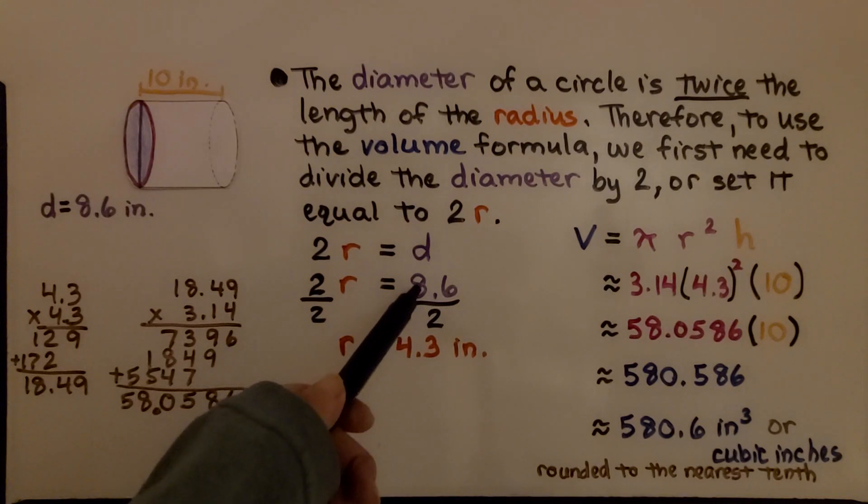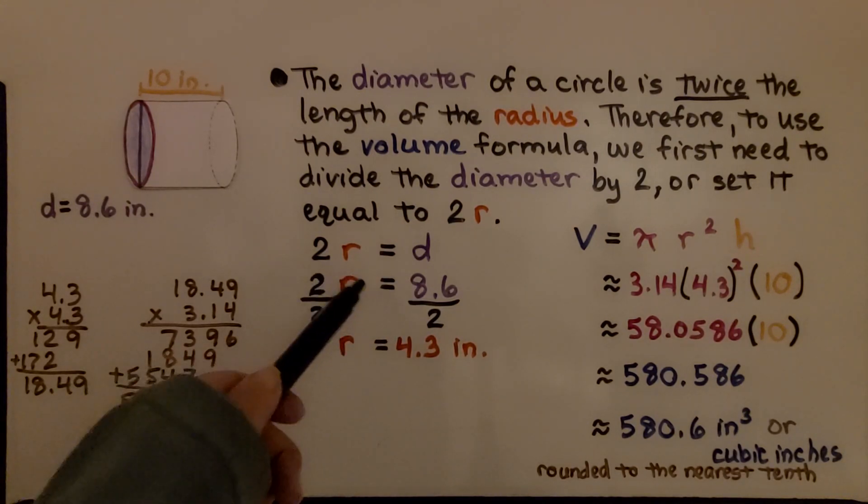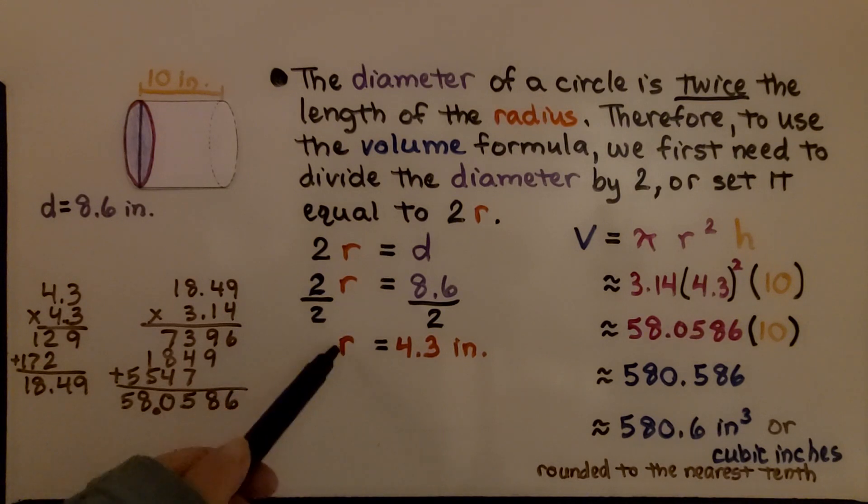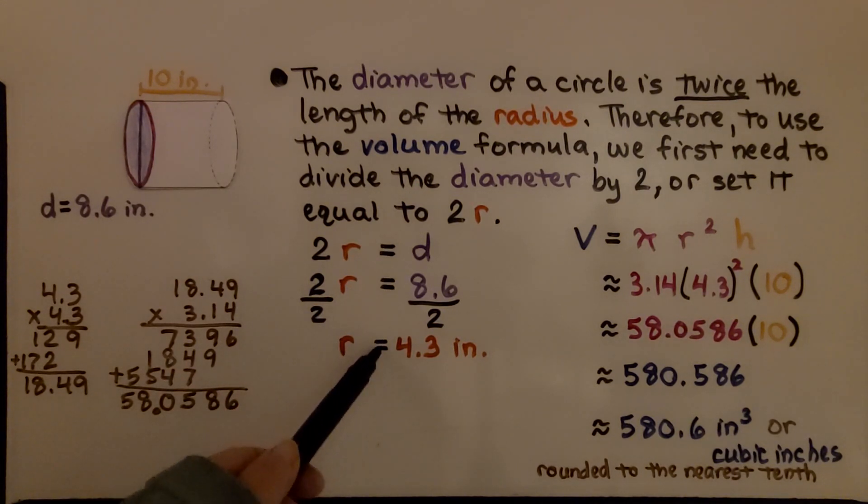That is 8.6. We can divide both sides by this coefficient 2 to get 1r. We know that the radius is 4.3 inches.